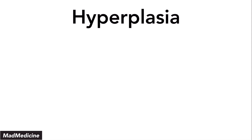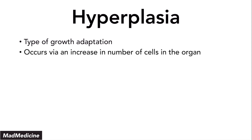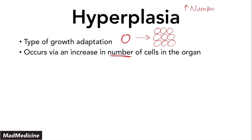Now let's compare that to hyperplasia. Hyperplasia and hypertrophy are similar, but hyperplasia is different in its own aspect. Hyperplasia is also a type of growth adaptation like hypertrophy. However, instead of increasing the size of the cell, it's going to increase the number of cells. If you had a cell, it will go into hyperplasia and you will have multiple of the same type of cell — instead of having one big cell. So you have an increase in number, and this works through a very simple mechanism.